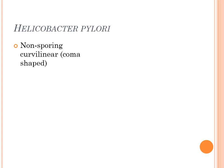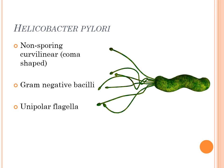Helicobacter pylori is a very important organism both theoretically and in clinical practice. It is a non-sporing, curvilinear, gram-negative bacillus with unipolar flagella. Looking at the picture, you can see it is curvilinear in shape with flagella at one end — hence unipolar flagella.